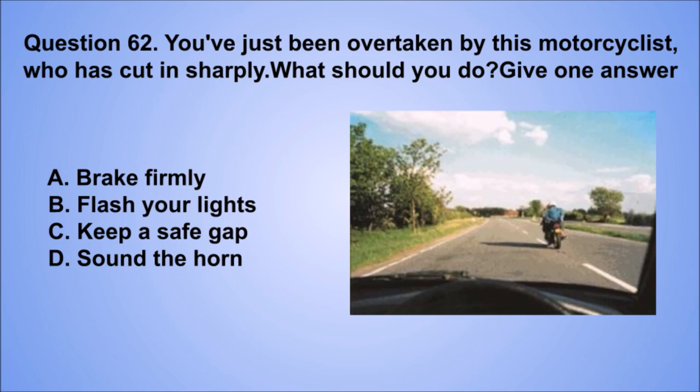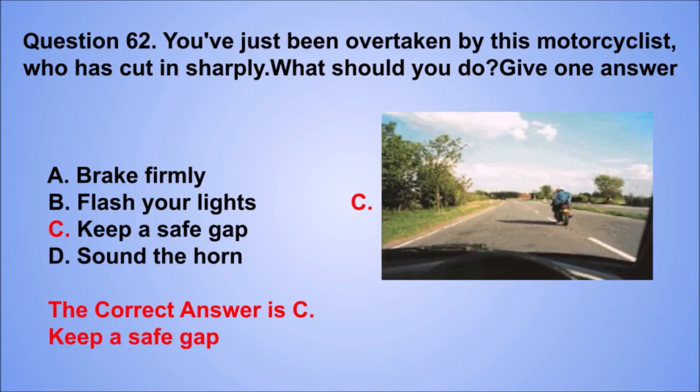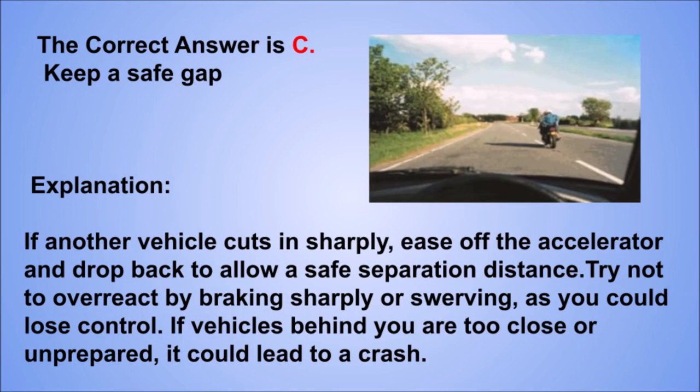Question 62. You've just been overtaken by this motorcyclist, who has cut in sharply. What should you do? Give one answer. A. Brake firmly. B. Flash your lights. C. Keep a safe gap. D. Sound a horn. The correct answer is C, keep a safe gap. If another vehicle cuts in sharply, ease off the accelerator and drop back to allow a safe separation distance. Try not to overreact by braking sharply or swerving, as you could lose control. If vehicles behind you are too close or unprepared, it could lead to a crash.